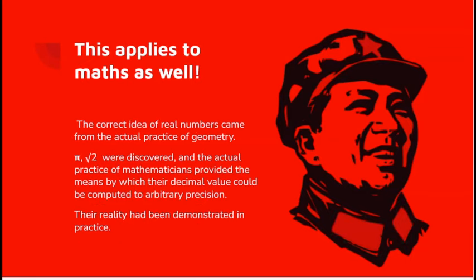The correct idea of real numbers came from the actual practice of geometry. Pi and root 2 were discovered. The actual practice of mathematicians later gave a means by which their decimal value could be computed, to arbitrary precision. Their reality had been demonstrated in practice.